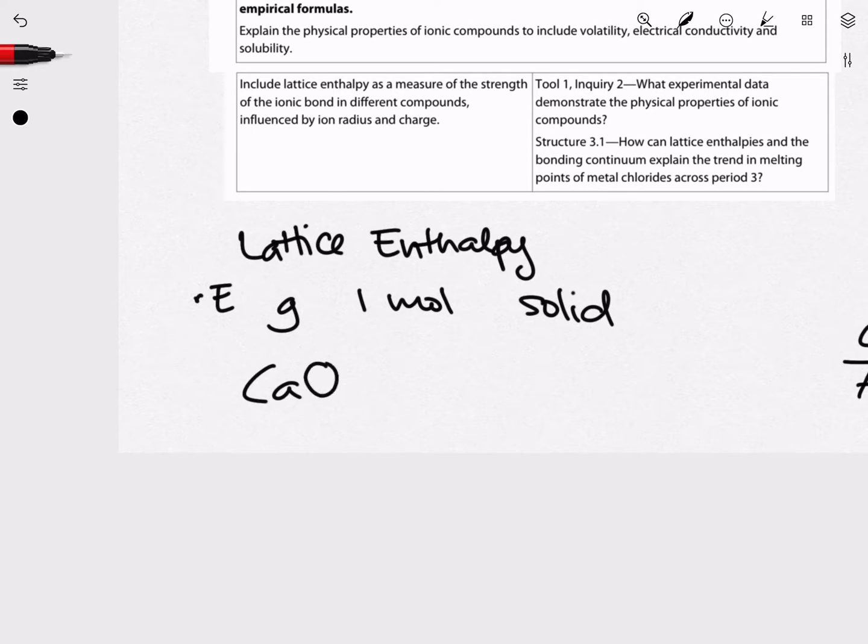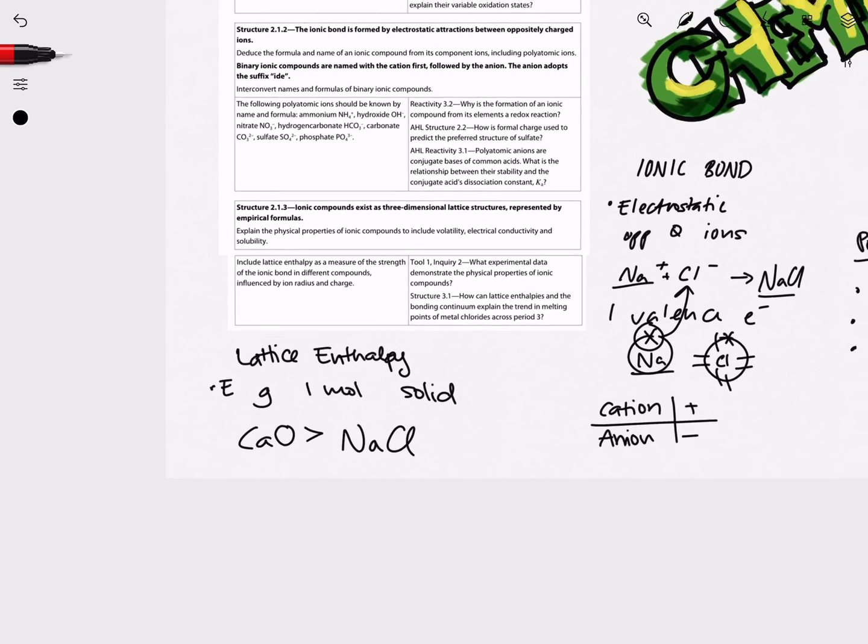This means that the more energy it takes to break the bonds within the lattice, the higher the lattice enthalpy is going to be. A nice example of this would be the comparison in melting points between calcium oxide and sodium chloride. Calcium has two valence electrons whilst oxygen has six. This means that calcium will give its two valence electrons to oxygen, meaning it is actually sharing more electrons than NaCl, which only donates one electron to the other, resulting in more oppositely charged ions and therefore a stronger bond.